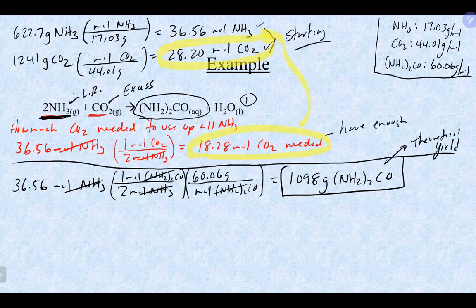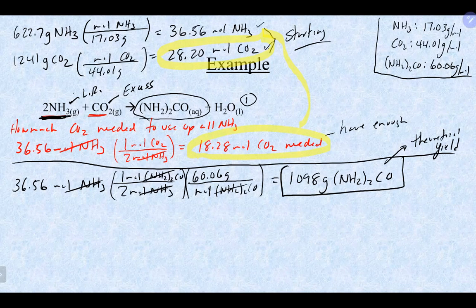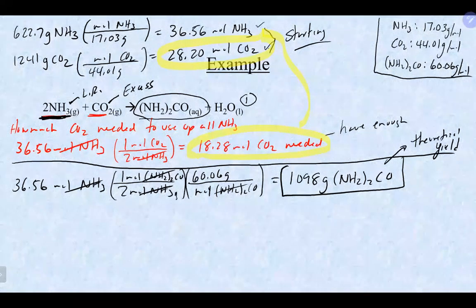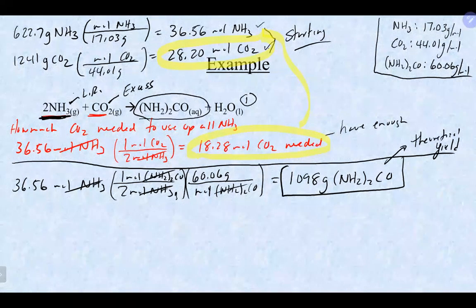If they want grams, you go one more step with molar mass. If they want moles, stop earlier. If they want any other unit, continue with conversions. Grams and moles are the most common ending points. For the excess reagent left over: we started with 28.20 moles of CO2, needed 18.28 moles, so 28.20 − 18.28 = 9.92 moles of CO2 left over.